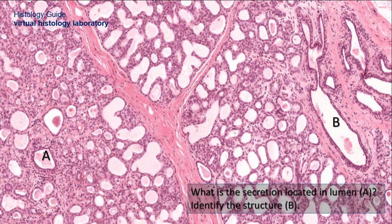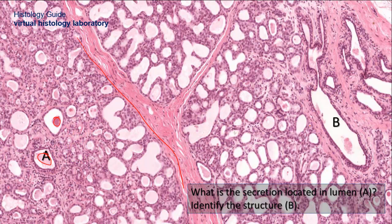What is the secretion located in lumen A, and identify structure B? This is a lactating breast showing multiple acini present in a lobe, with an interlobar septum visible. The fluid in the lumen is milk, secreted by the acini, which then reaches the ducts lined by simple or stratified cuboidal epithelium. Structure B is a lactiferous duct embedded in connective tissue.